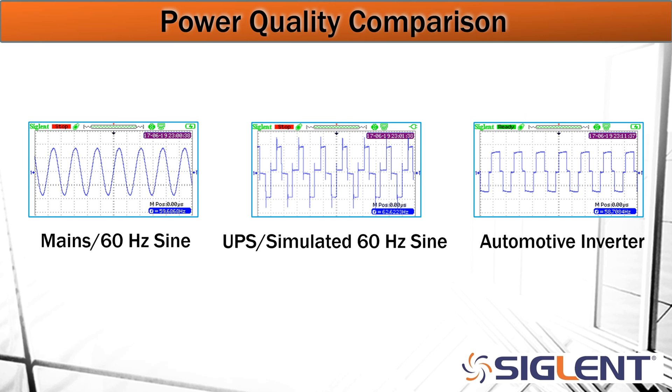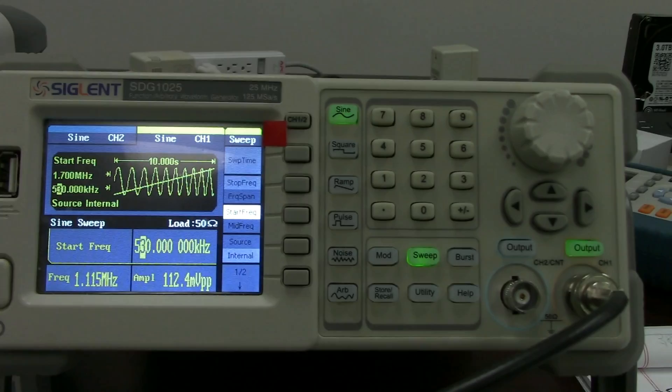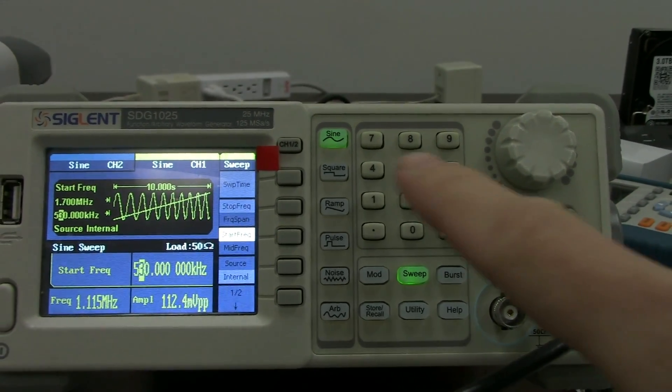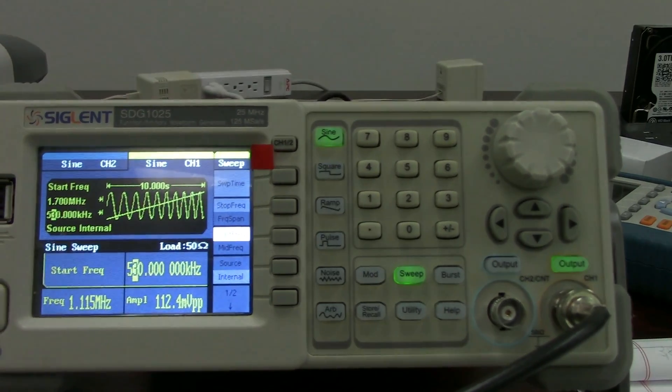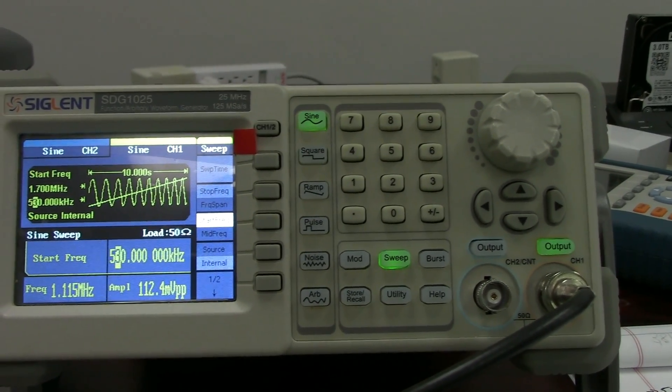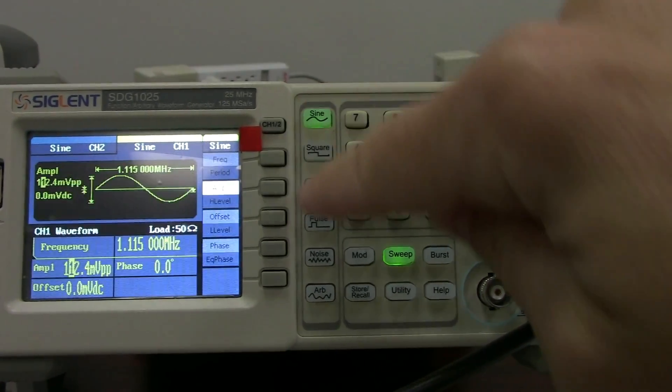And now off to the lab for measurements using mains power. We're going to take one of our arbitrary waveform generators and set up a sweep from 530 kilohertz to 1.7 megahertz, the AM broadcast band here in North America.